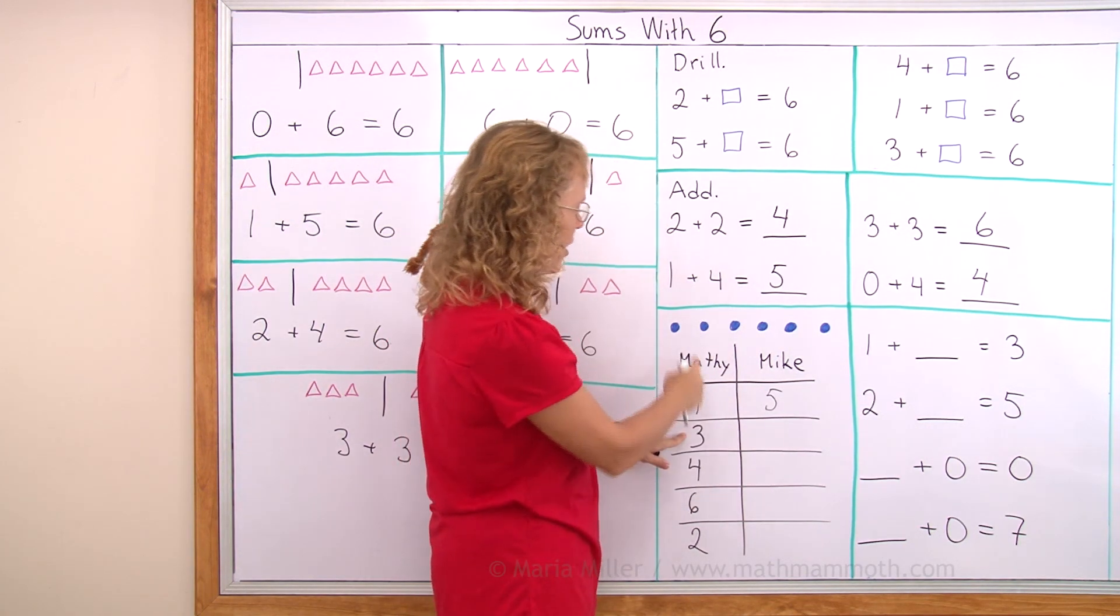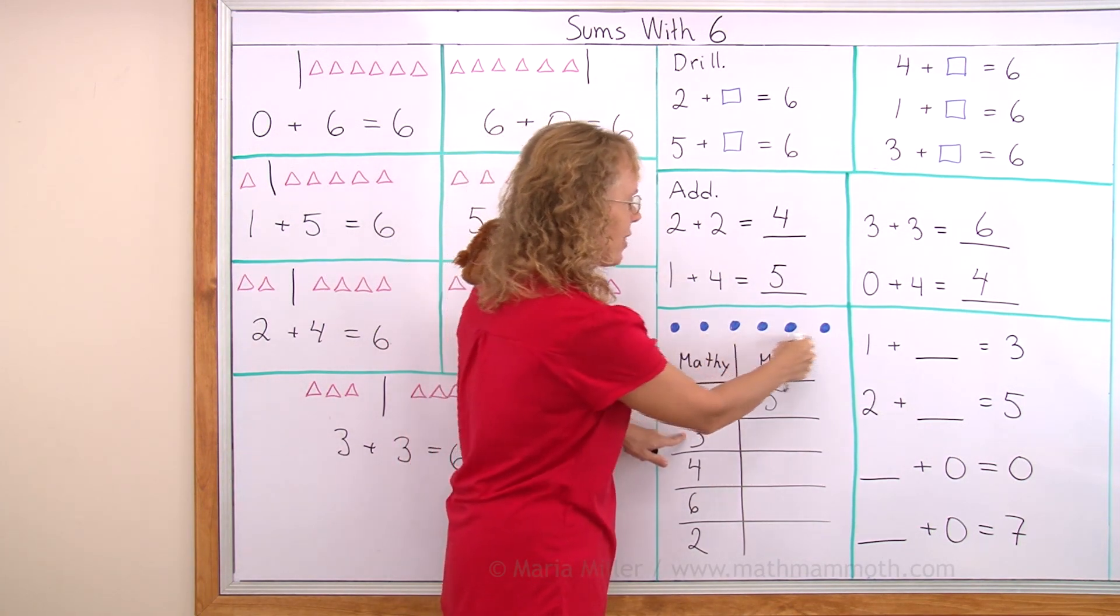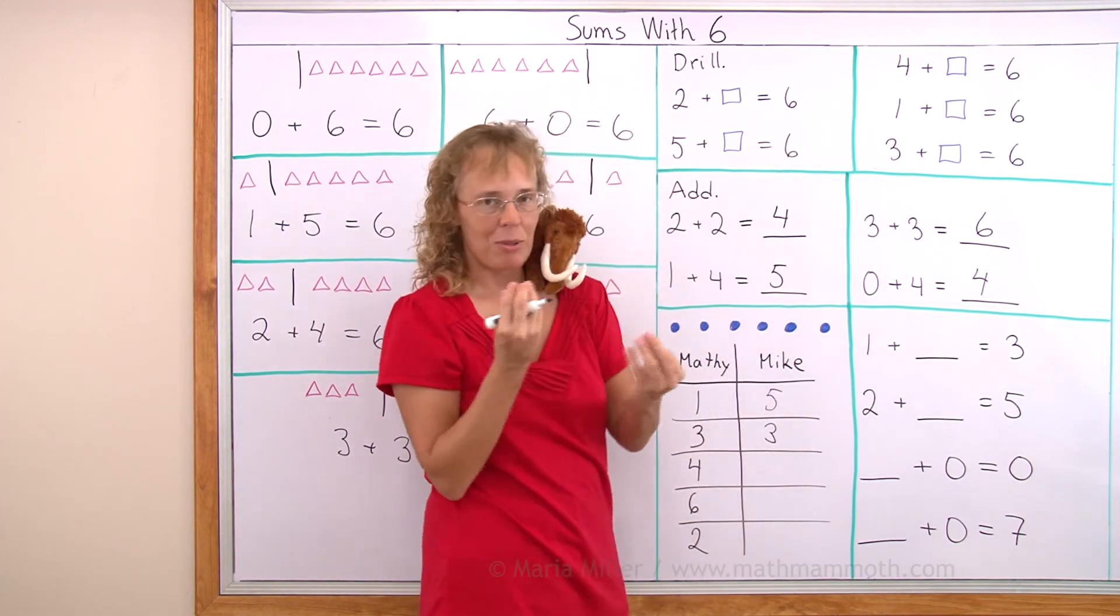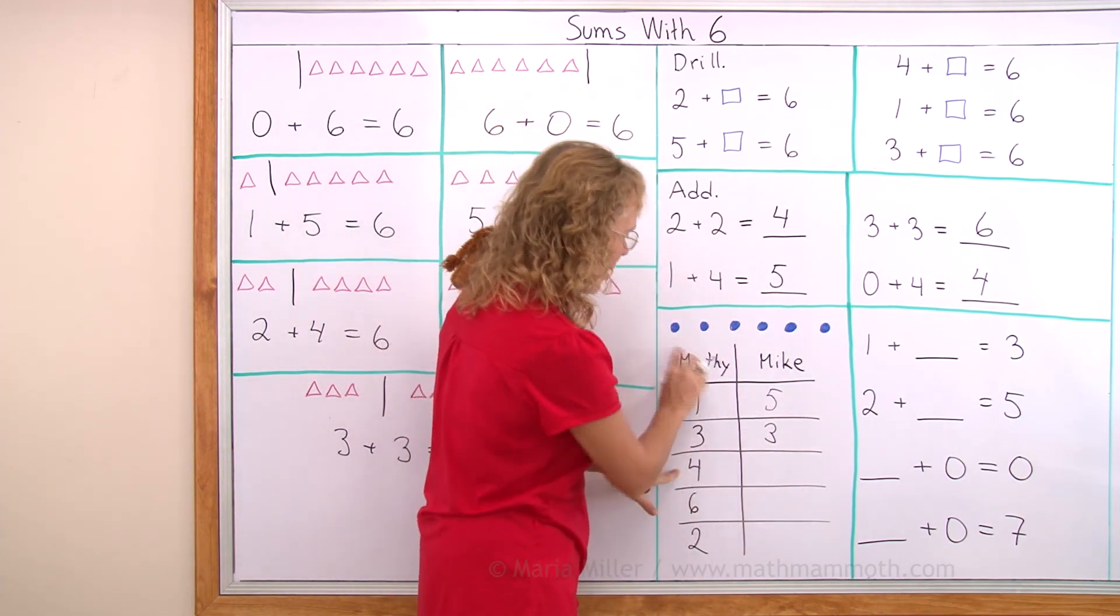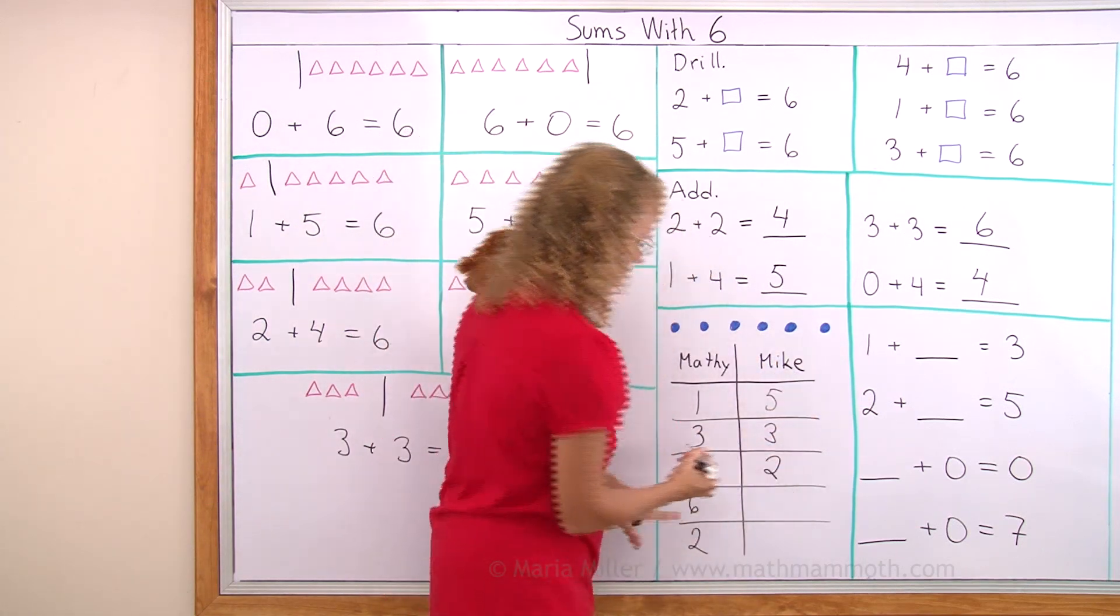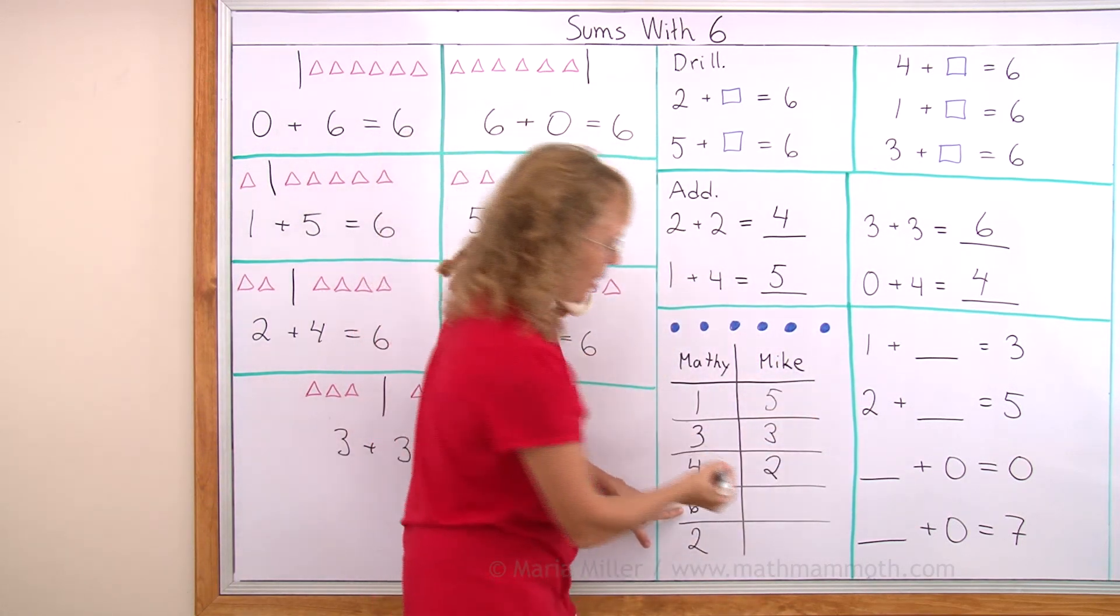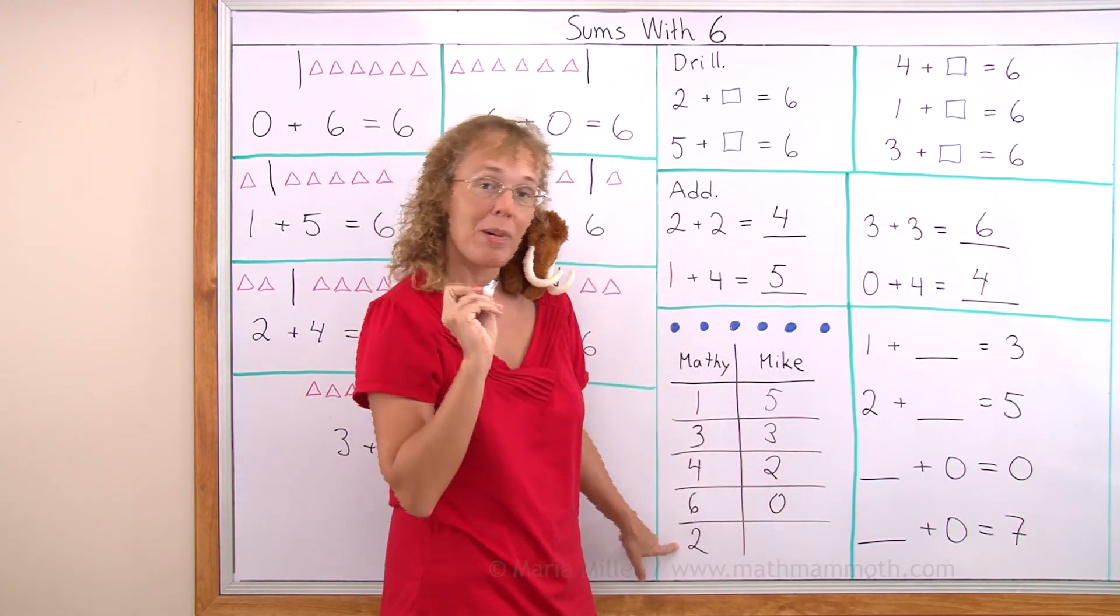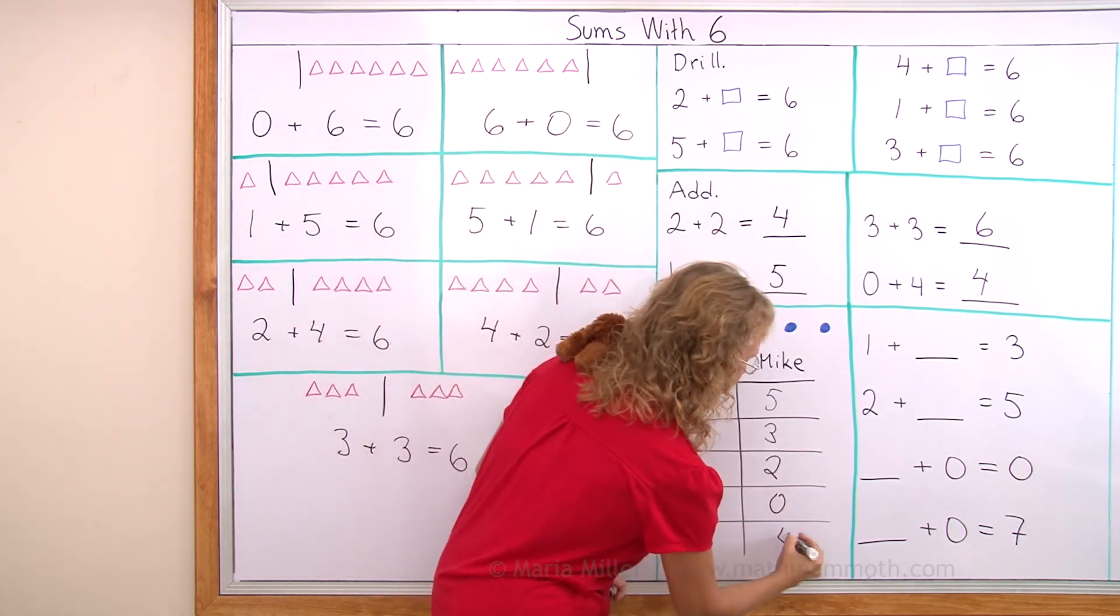If Matthew gets three, then Mike gets three. Three and three is another way to make six. And if Matthew gets four, then Mike gets two. If Matthew gets six, Mike gets none. And if Matthew gets two, Mike gets four. Right.